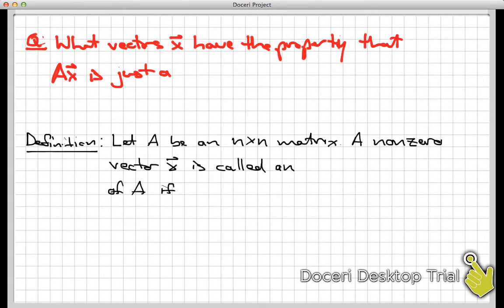Let's move to a general question that we're going to answer now. So the question we're going to address here is what vectors x have the property that A times x is just a scalar multiple of x? In other words, what are these vectors such that when I multiply them by A, they don't really move around that much. They just simply move to a different location on the line that they started on. Maybe reverse direction, maybe stretch a little bit, but no rotation and no significant movement.